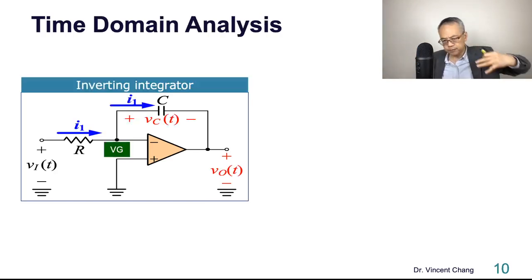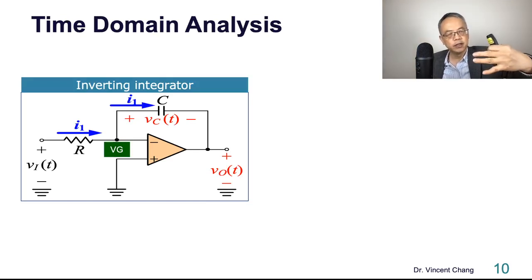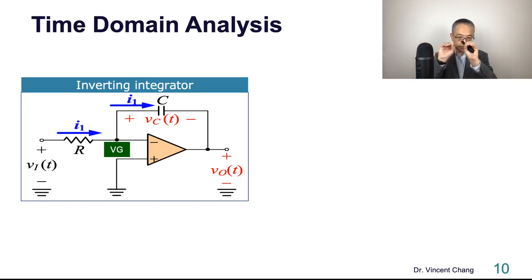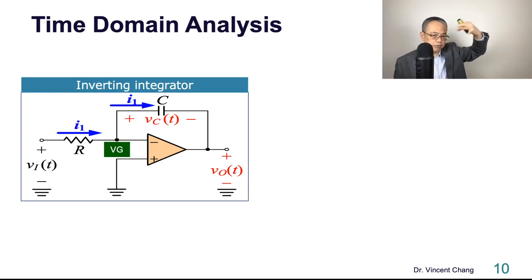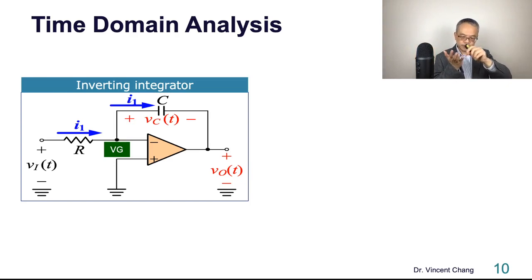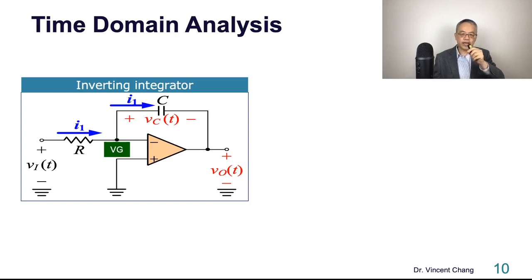Now we move from frequency domain analysis to time domain analysis. You'll notice the symbol variable has changed from capital V to lowercase v. In the frequency domain we use capital letters; in the time domain, for conventional systems, we use lowercase v as a function of time.